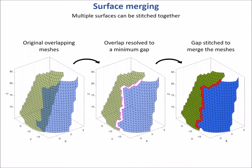Any overlapping meshes are automatically merged together by resolving the overlaps and stitching together any gaps using Delaunay triangulation.